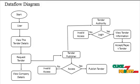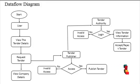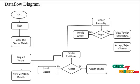Let's see our project data flow diagram. In our project there are three models: User, Tender Publisher, and Tender Authority.